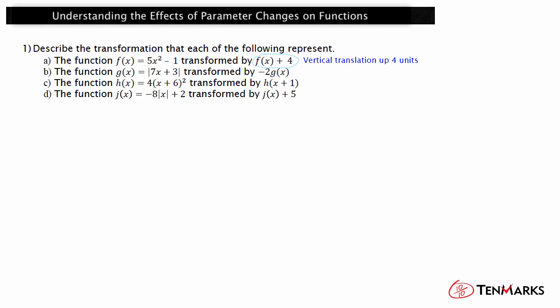The function g(x) = |7x + 3| transformed by −2 · g(x). The function value is multiplied by negative 2. This would represent a vertical stretch or compression. Since the absolute value of k is 2, which is greater than 1, it is a vertical stretch by a factor of 2. The fact that the k value is negative means the graph is also reflected over the x-axis. So the transformation −2 · g(x) is a reflection over the x-axis and a vertical stretch by a factor of 2.